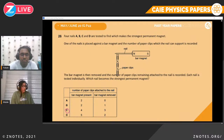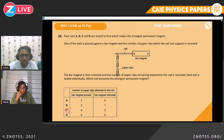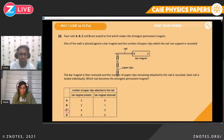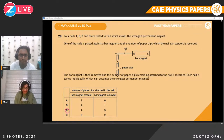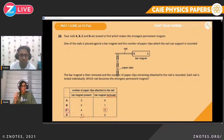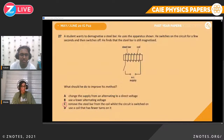Question twenty-six. Four nails A, B, C, and D are tested to find which makes the strongest permanent magnet. A nail is placed against a bar magnet, and the number of paper clips it supports is recorded. The bar magnet is then removed and the remaining clips are counted. We don't care how many clips when the magnet is present — we care about after the magnet is removed, because we want a permanent magnet. Therefore the answer is C, the highest count after removal.